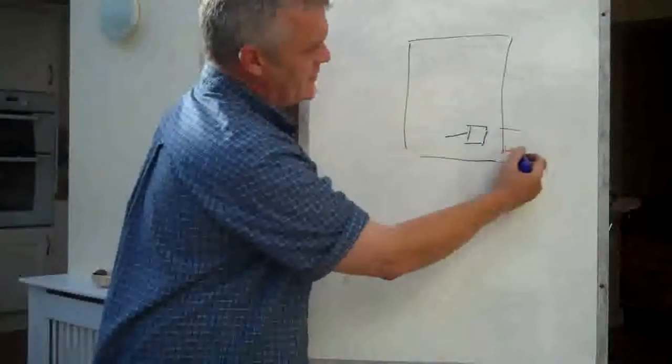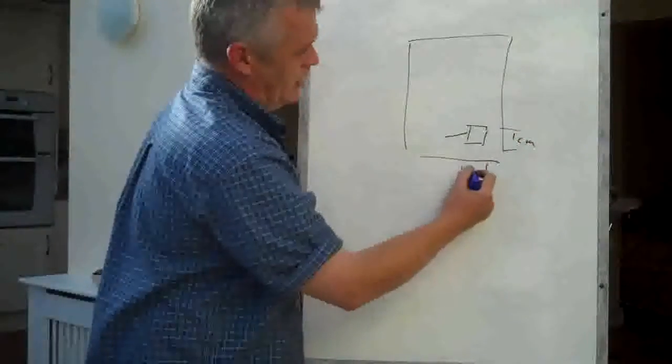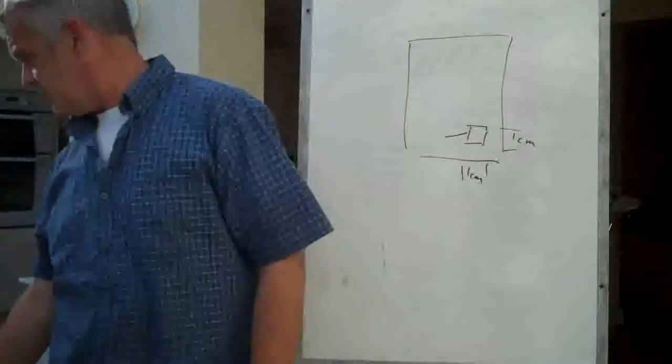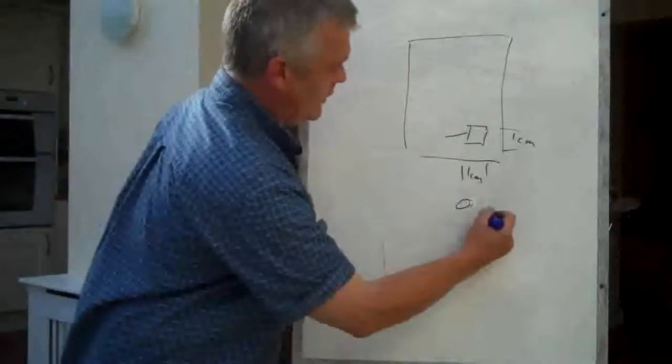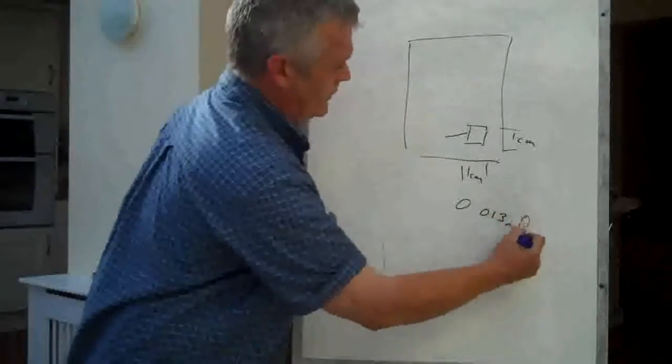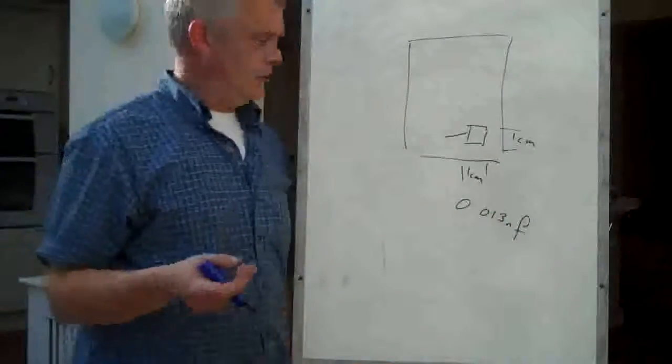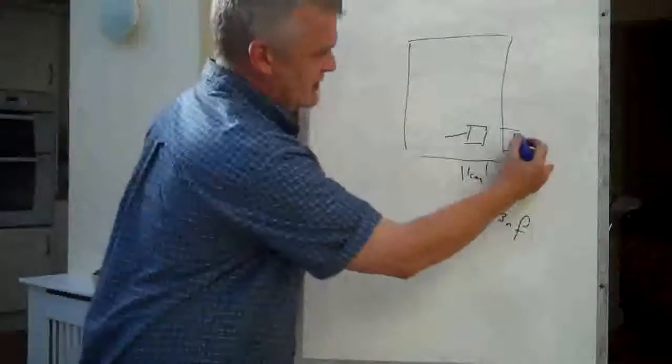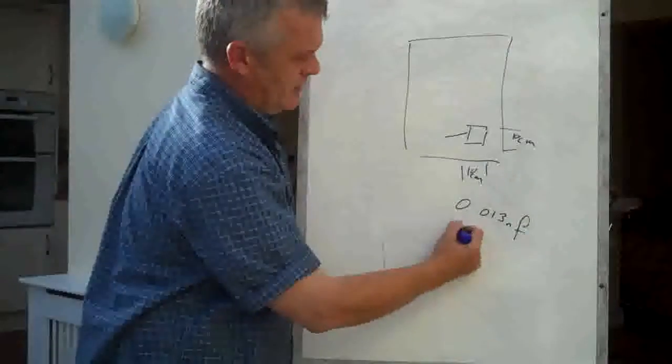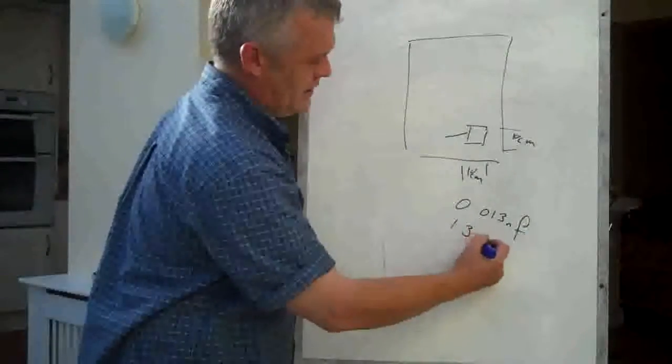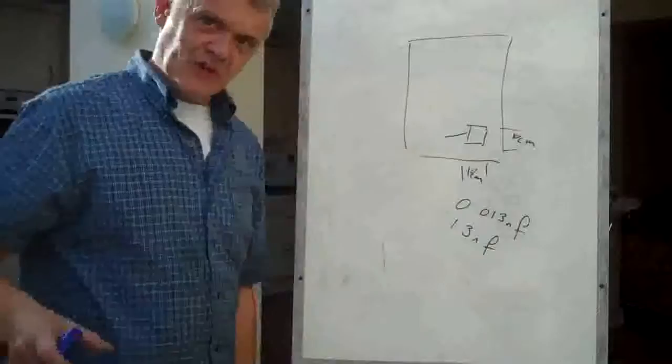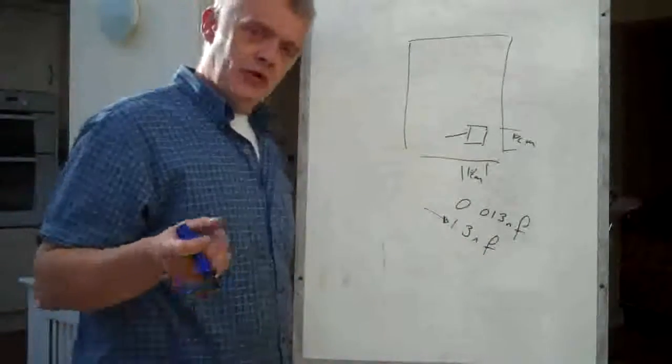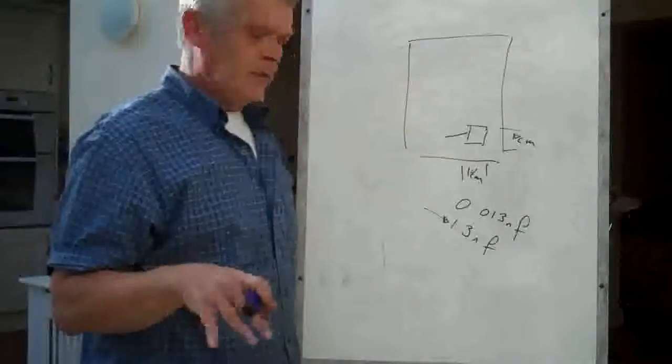If that square is 1 centimeter by 1 centimeter, then the capacitance is actually going to be 0.013 nanofarads, which is really really small. If I change that to 10 centimeters by 10 centimeters, then the capacitance is going to be 1.3 nanofarads, which is much better. And actually that kind of figure is usable in normal circuits and the kind of circuits you want to build.